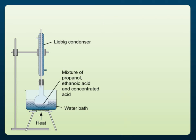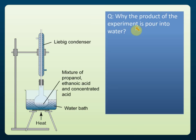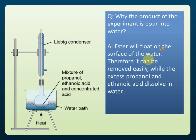Why is the product poured into water after the reaction? This is to separate the ester from ethanoic acid and propanol, because propanol and ethanoic acid are soluble in water but ester is insoluble. When poured into water, the acid and alcohol dissolve, but the ester does not dissolve and floats on the surface, so it can be removed easily.